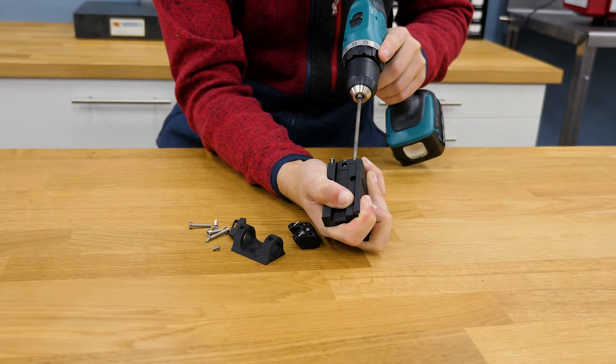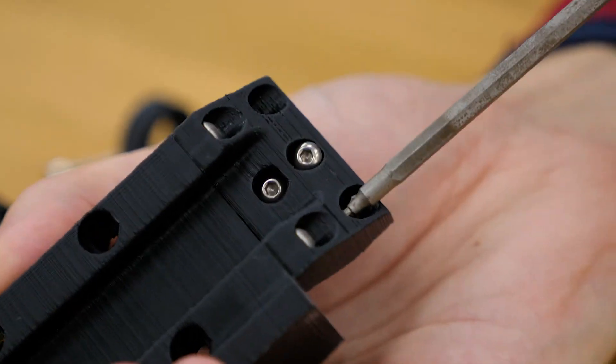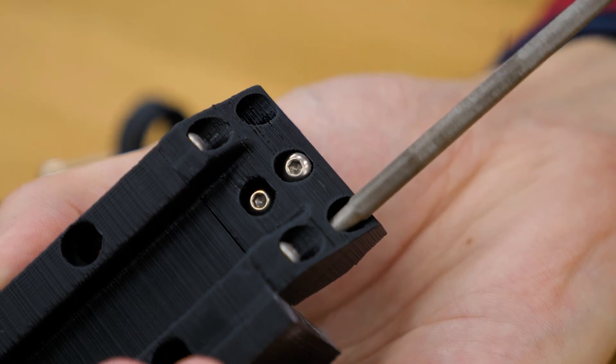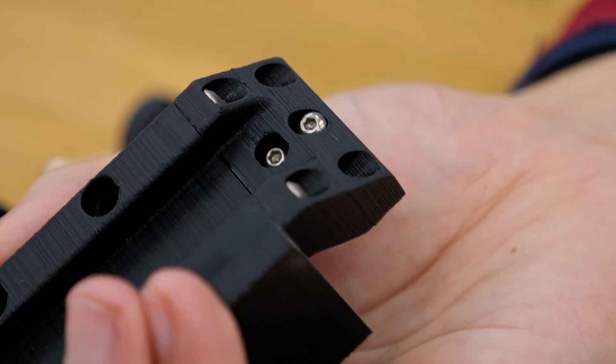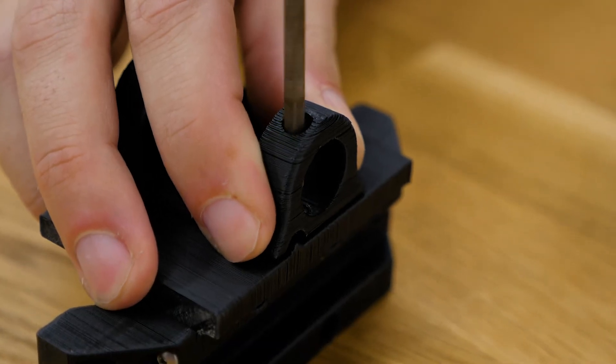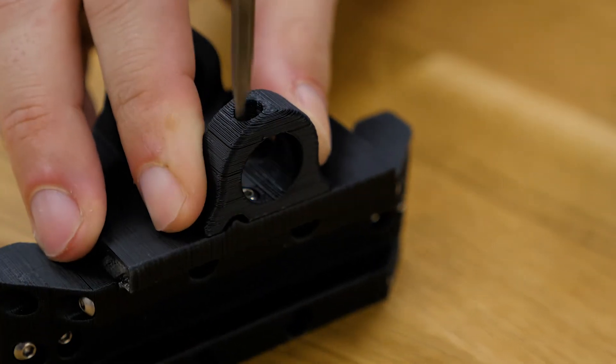The first step in making the guide rail car blocks is mounting the offset blocks to the main bodies. This is done with four M3 screws on either side. The next step is to screw on the tube holder with two M3 screws.